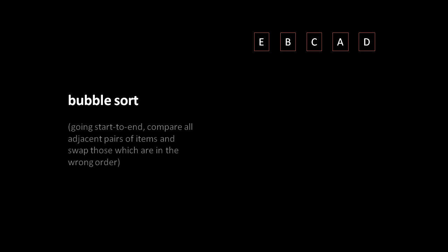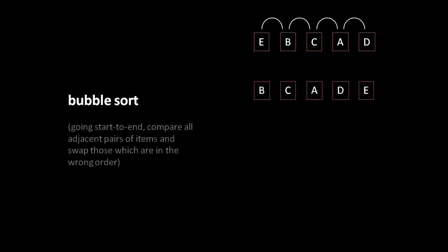In our first pass through the list, we compare the first element and the second element — E and B — then the second and third, third and fourth, and fourth and fifth, left to right, swapping as we go if they are not in the correct order. E is not less than B, so we swap them. E then compares against C — out of order, swap. E then compares against A — out of order, swap. E then compares against D — out of order, swap. D ends up in the fourth position and E in the fifth.